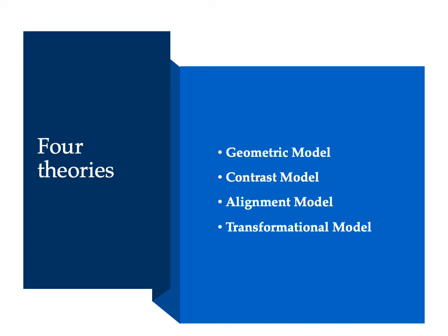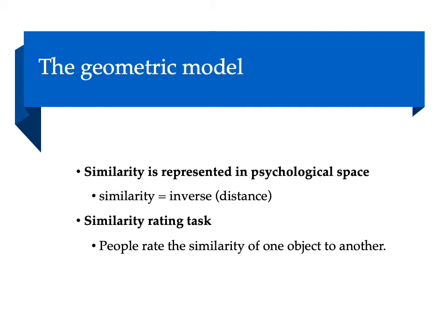This will probably take about 10 or 15 minutes for the first, and then we'll discuss the other three. The first model is the geometric model. The core assumption is that psychological similarity can be represented in a psychological space that is analogous to physical space, where similarity is the inverse of distance.